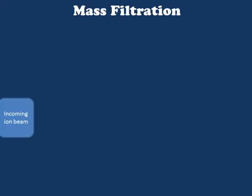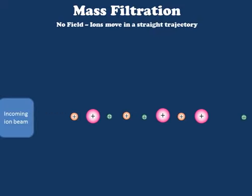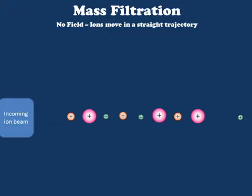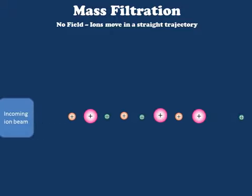Now that we've created our ions, let's move on to the mass filtration or mass analysis step. In this step, the ions which are formed are focused into a beam. If these beams are focused into an area in which there is no appreciable magnetic field, the ions will move in essentially a straight line. This doesn't help us very much to separate them in space. Therefore, we apply a magnetic field to the region through which this ion beam is moving.